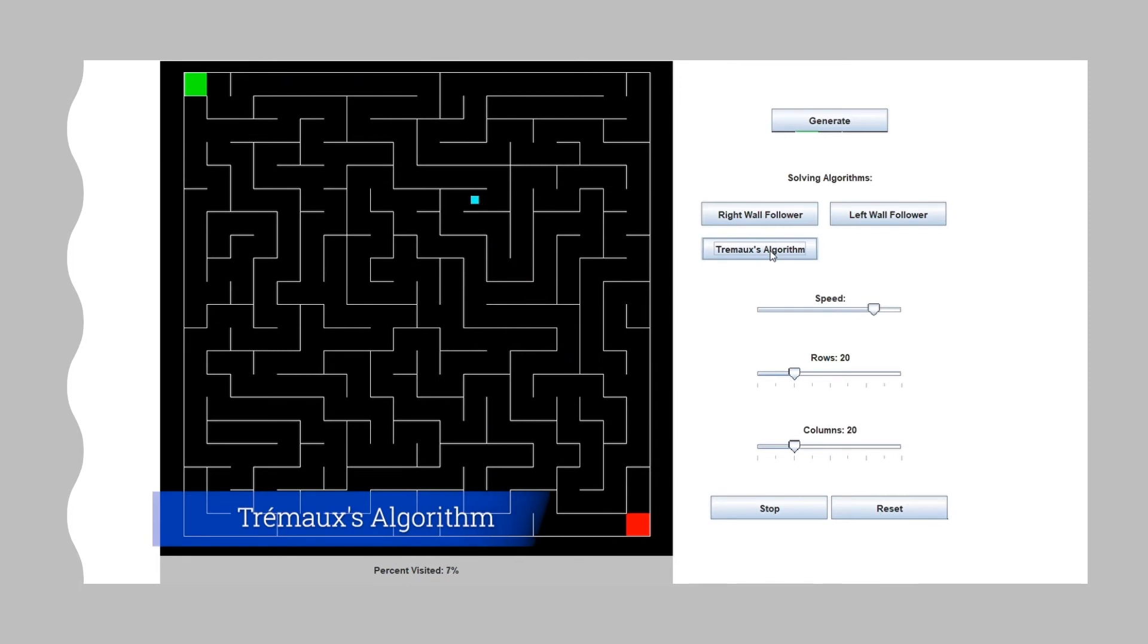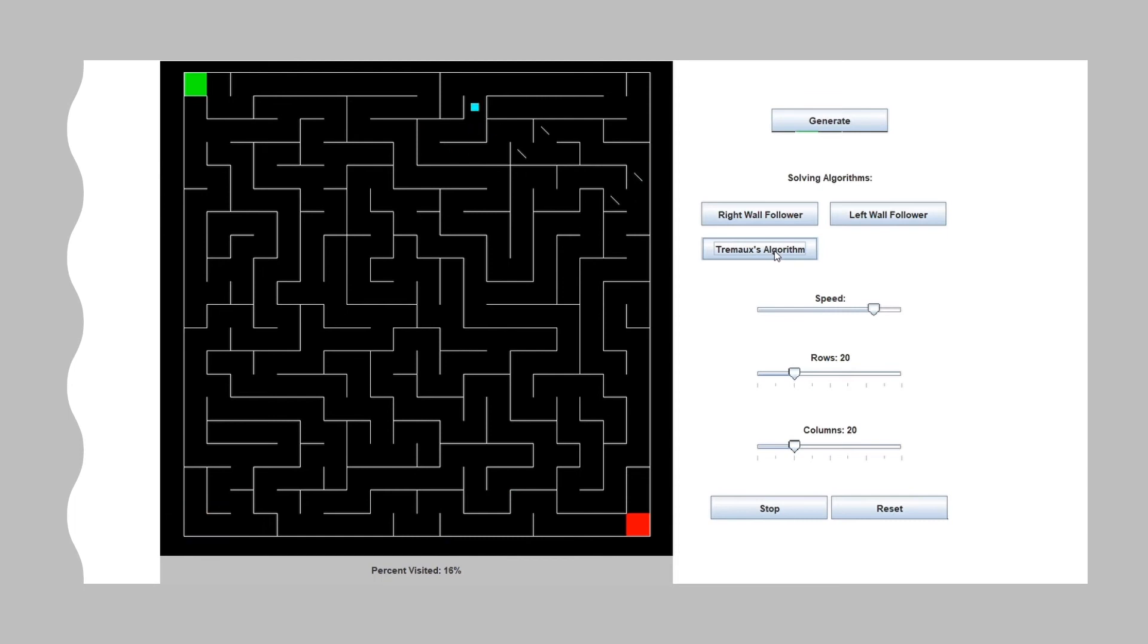Now we go into Trémaux's algorithm. In this one the current cell is marked by the cyan square and a diagonal line is marked at the junctions. When the mark passes a second time, it becomes an X, signifying the dead end.